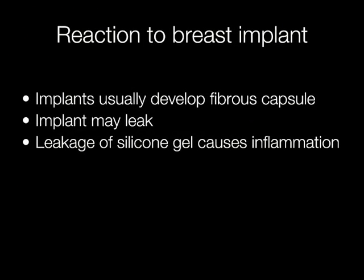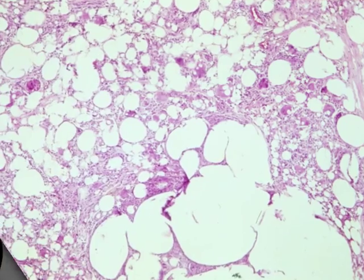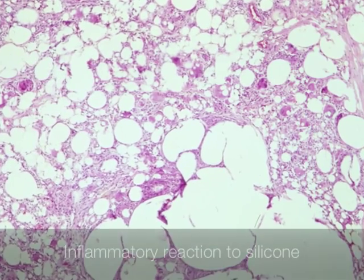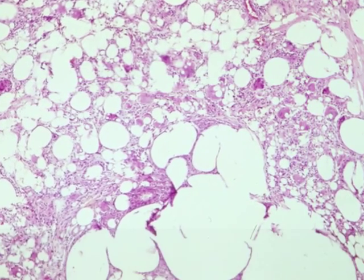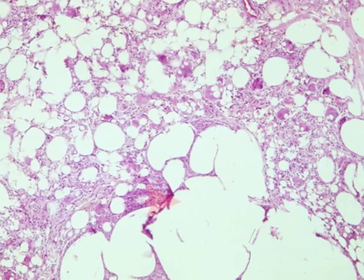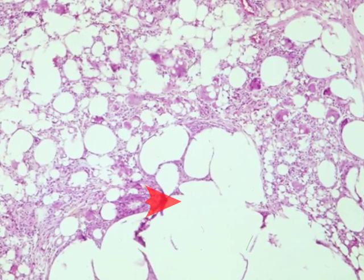Breast implants cause a fibrous capsule to develop. The implants may leak, and leakage of silicone gel, for example, causes an inflammatory reaction and a foreign body giant cell response. Here we see an inflammatory and foreign body giant cell response to silicone from a leaking implant.